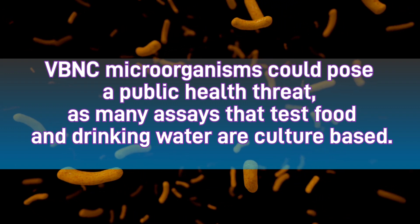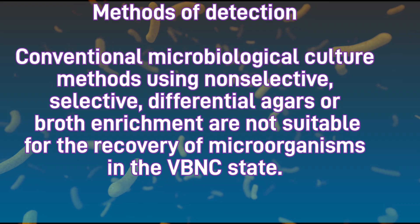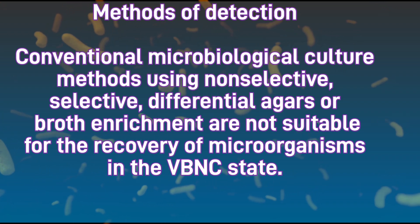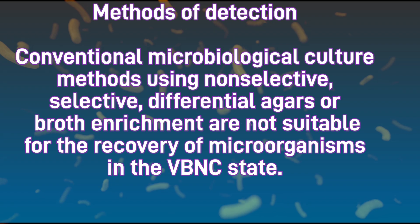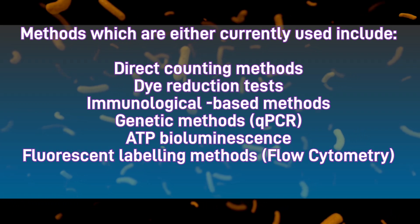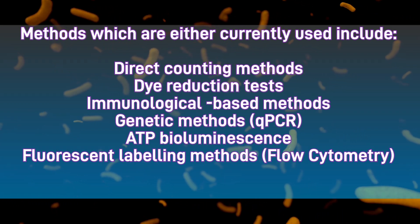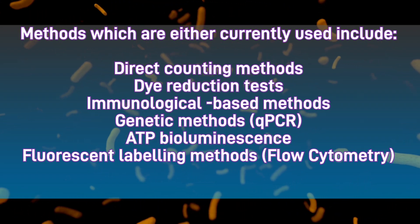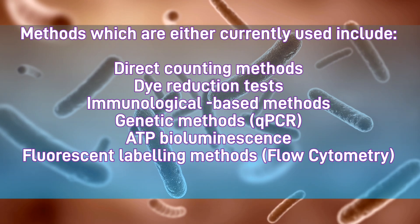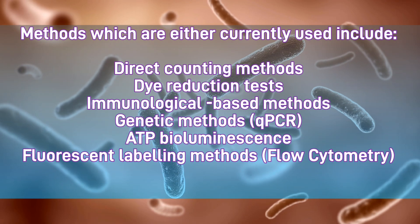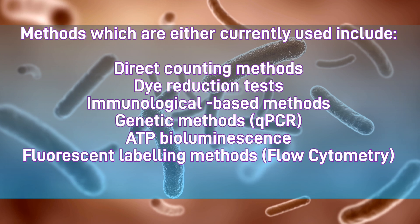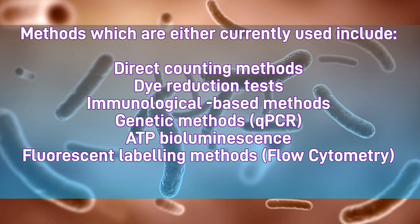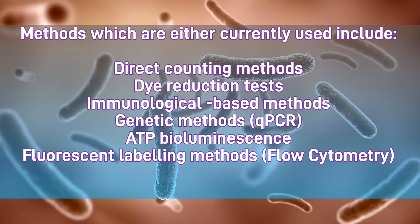VBNC cells can be directly identified under the microscope, though regular Gram stain or other stains may help but cannot serve as 100% confirmatory tests. VBNC cells can also be recognized via flow cytometry, where viable but non-culturable cells can easily be identified, and by viability quantitative polymerase chain reaction (qPCR) — a specialized, quantitative PCR that allows real-time assessment of VBNC bacteria in a particular sample.